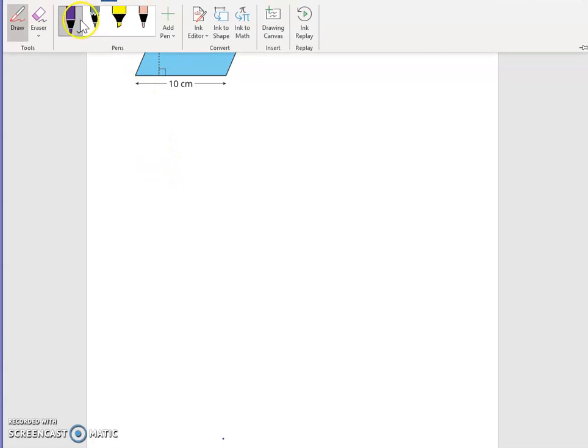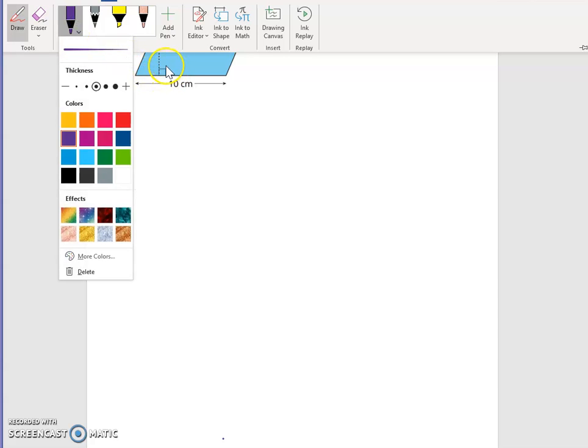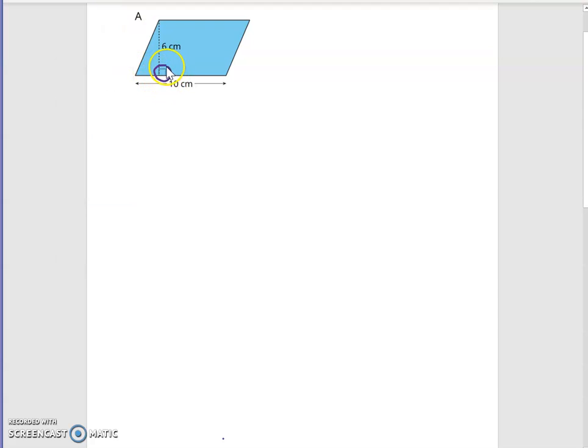We know that this is the correct base and height because we can see this right angle here. You will also notice that the right angle forms a t-shape in the parallelogram.